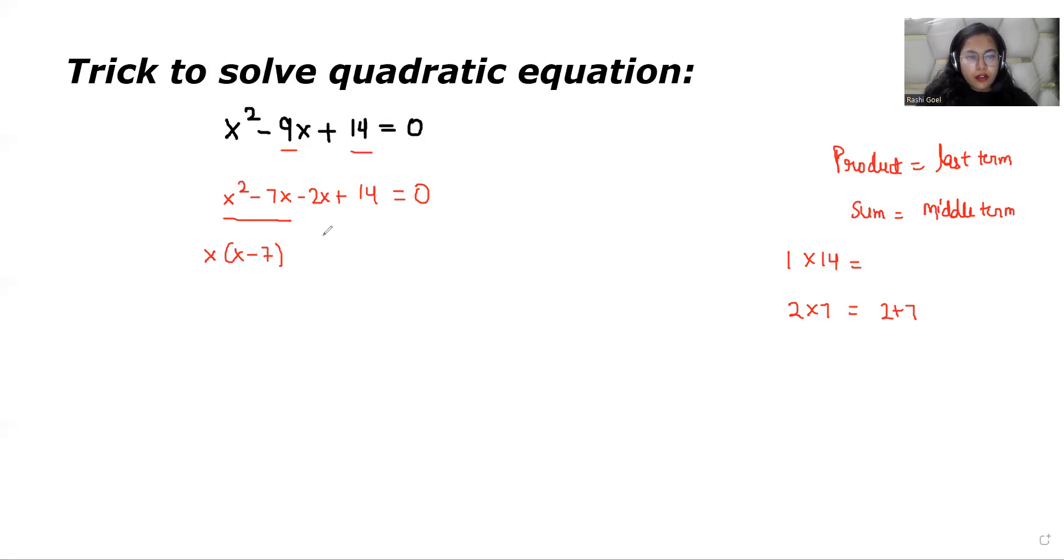So what is left? x minus 7. And from the next two terms we can take minus 2 common. So what is left? x minus 7.